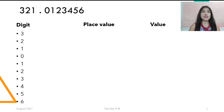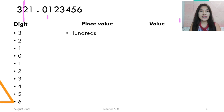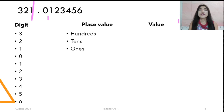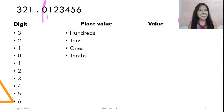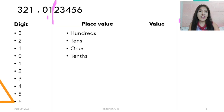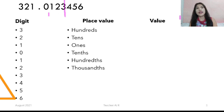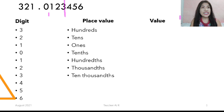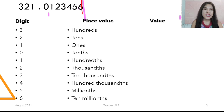So when we have 321.0123456, the digit 3 has a place value of hundreds, the digit 2 is tens, and the digit 1 is ones. Then, after the decimal point: the digit 0 is tenths, the digit 1 is hundredths, the digit 2 is thousandths, the digit 3 is ten-thousandths, the digit 4 is hundred-thousandths, the digit 5 is millionths, and the digit 6 is ten-millionths.